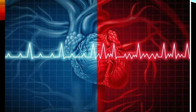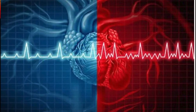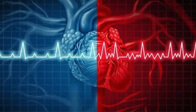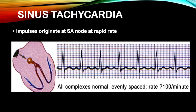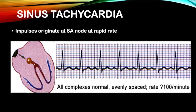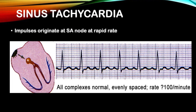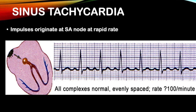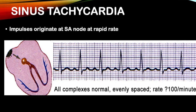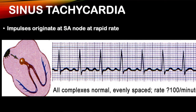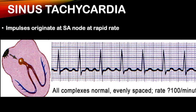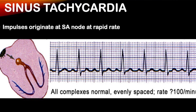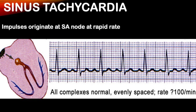The normal beating heart is called sinus rhythm. We have P waves preceding each QRS, and the beat-to-beat intervals are perfectly regular. The P wave is recording the electrical activity of the upper chambers, the atria. The QRS is the electrical recording of the ventricles, the pumping chambers of the heart.